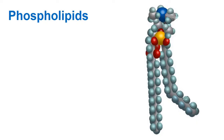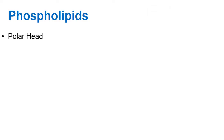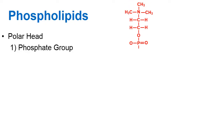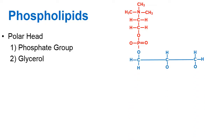I want to look at a phospholipid in more detail. Here's our phospholipid from earlier. Notice how it has a cluster of atoms at the top — we call this the head — and then dangling down there appear to be two chains of atoms, and these are the tails. When we look at the head of a phospholipid, it's chemically polar, and it's made from two parts: the phosphate group — notice how there's phosphorus at the bottom of that structural diagram — and the second part is the glycerol.